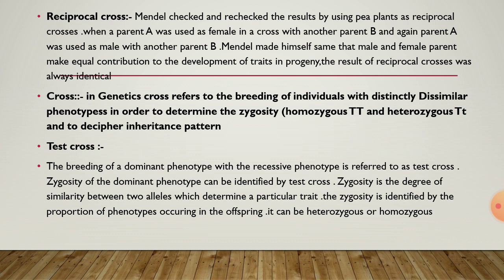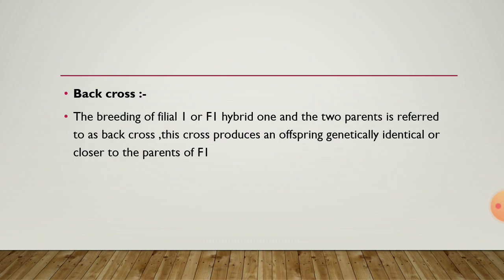The cross determines whether an individual is homozygous or heterozygous, and deciphers the inheritance pattern. Test cross: the breeding of a dominant phenotype with a recessive phenotype is referred to as a test cross. Zygosity of the dominant phenotype can be identified by test cross. Zygosity is the degree of similarity between two alleles which determine a particular trait, defined by the proportion of phenotypes occurring in the offspring. It can be heterozygous or homozygous.